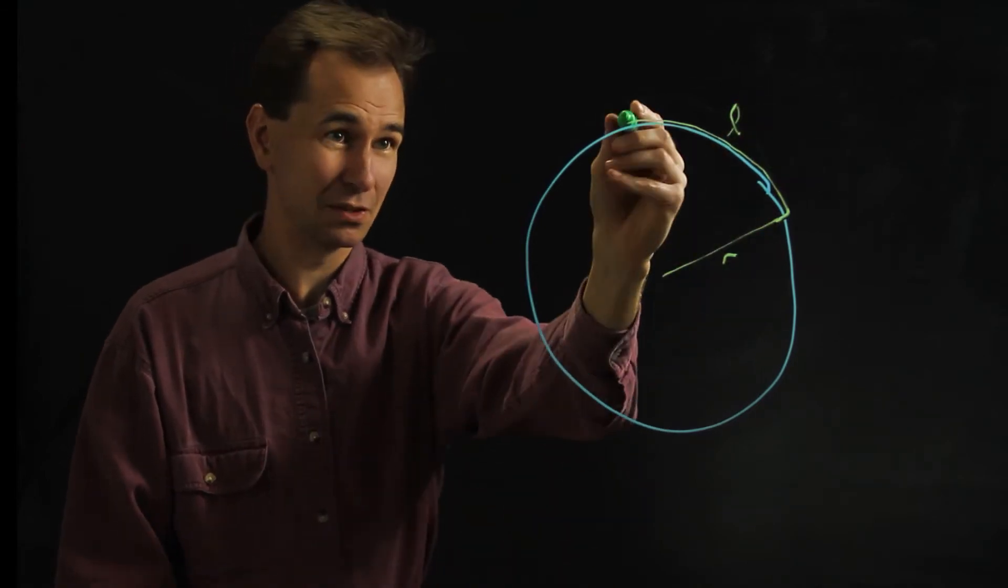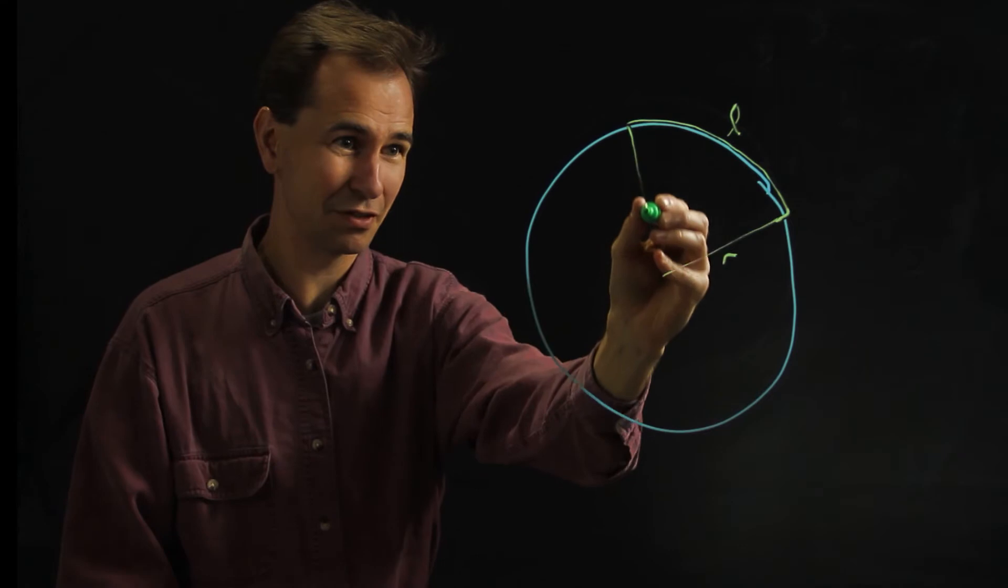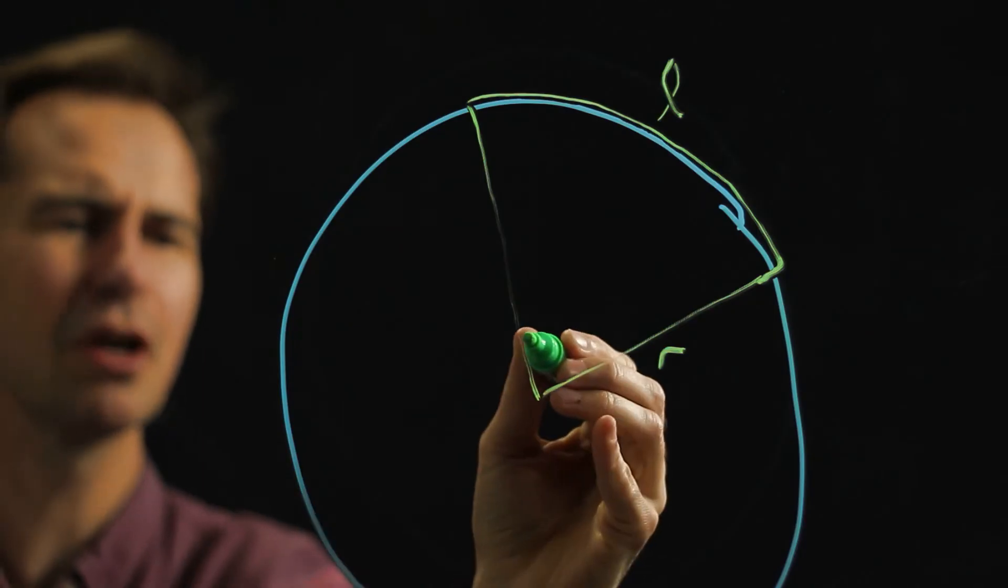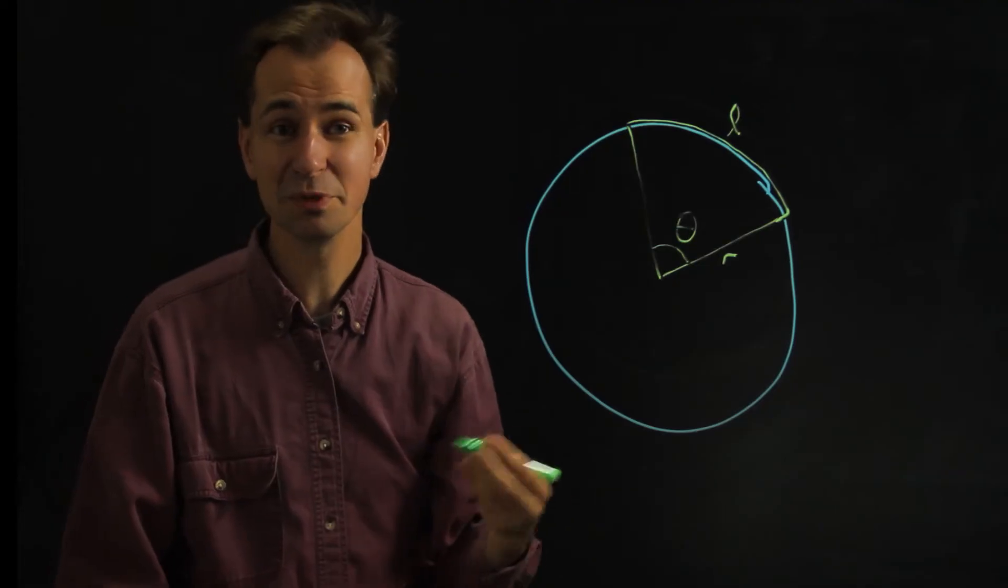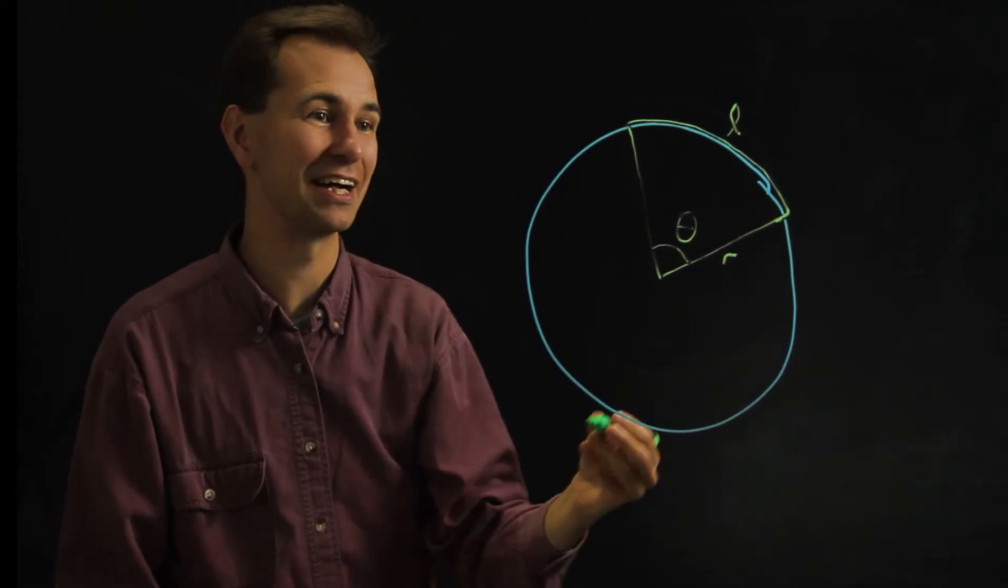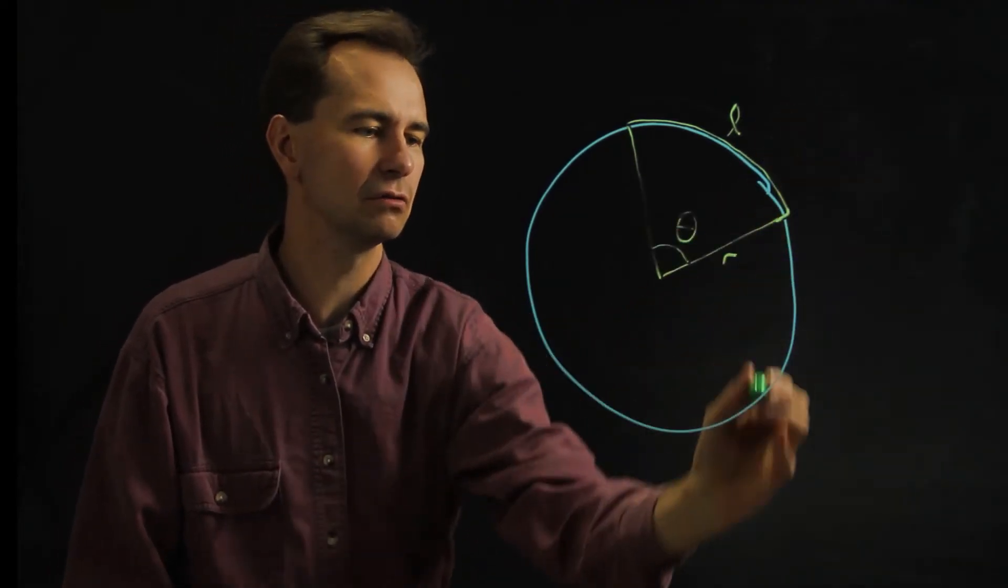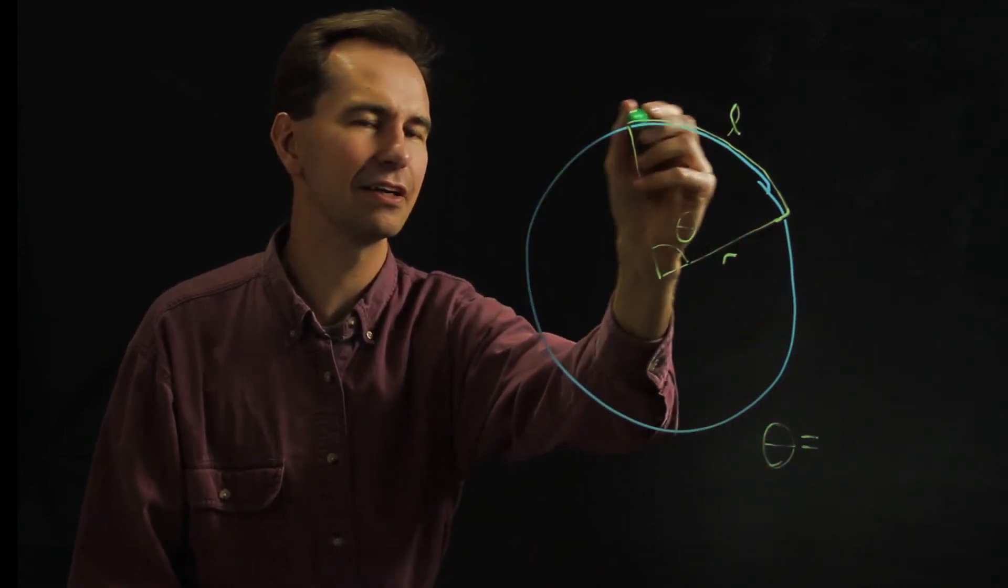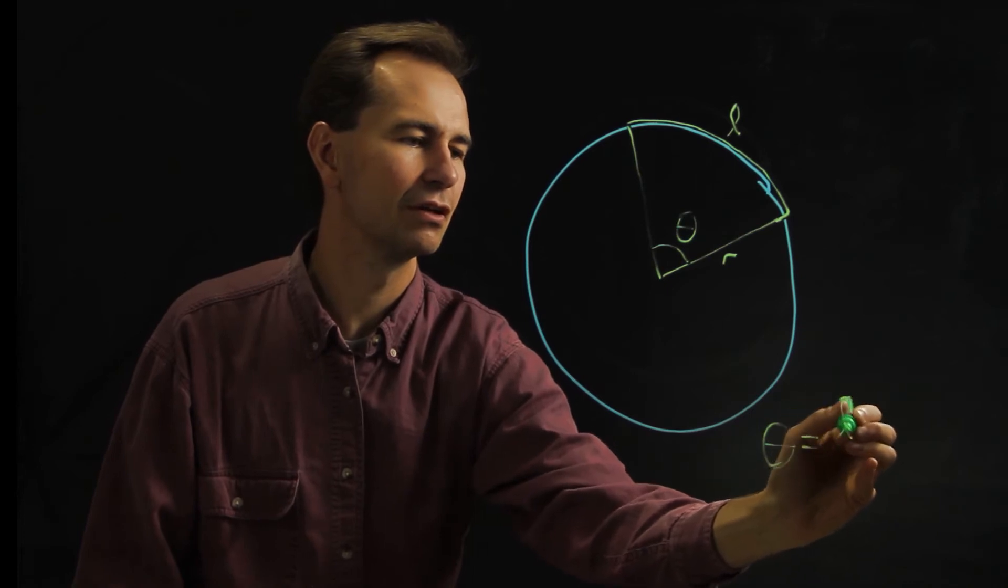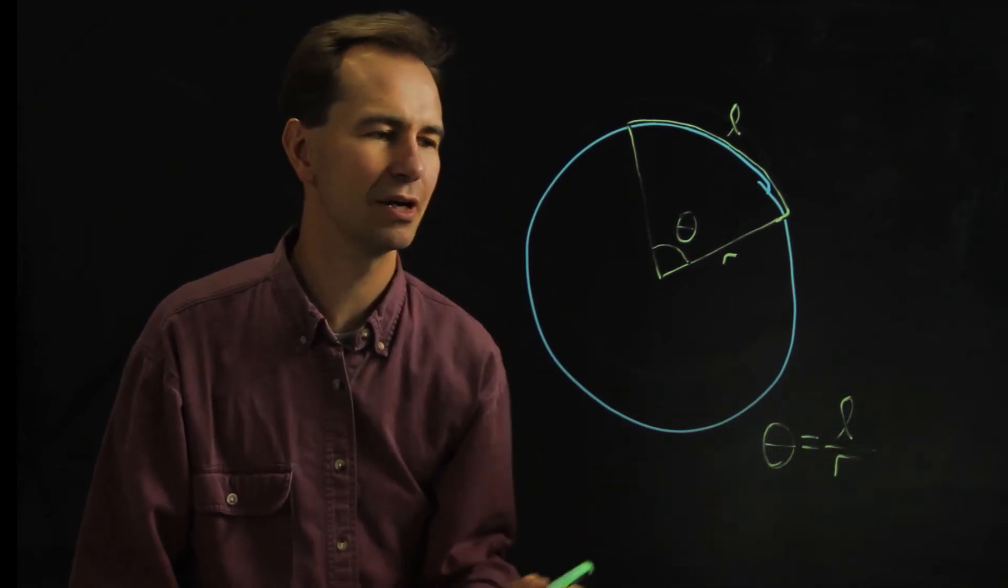So there's a segment of that circle and we want to know what this angle is. There's a really simple way to figure that out. The angle is just that length of arc divided by the radius.